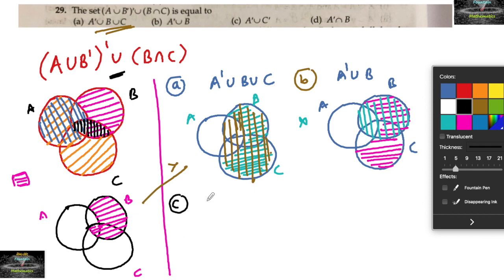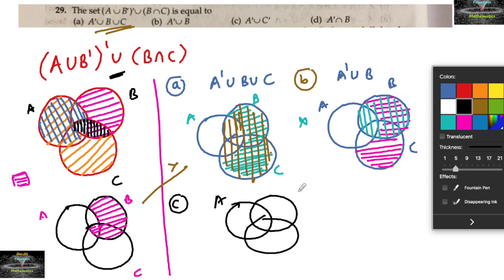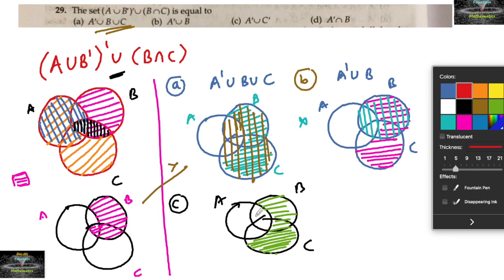Coming to option C: A complement union C. A complement will be other than A, and C complement will be other than C. Since it is a union, the entire shaded region — either red or green color — but it is not matching. So option C is also not correct.